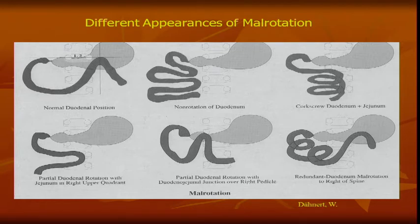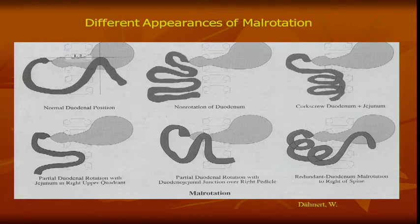If you distend the stomach too much — if you really give them a lot to drink — it can push the ligament of Treitz down, so it'll look like it's not in the normal correct place. It'll look lower, but that's because you over-distended the stomach. So you don't want to really over-distend the stomach.